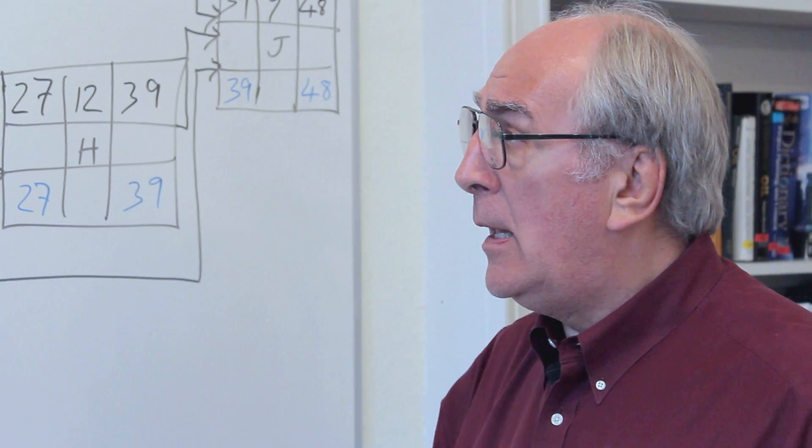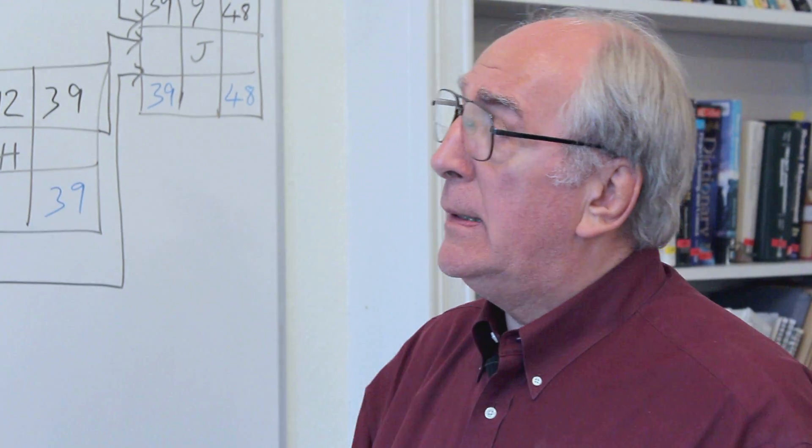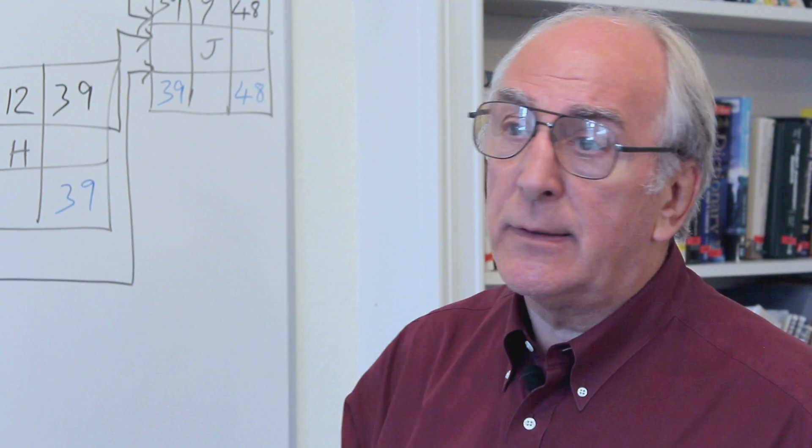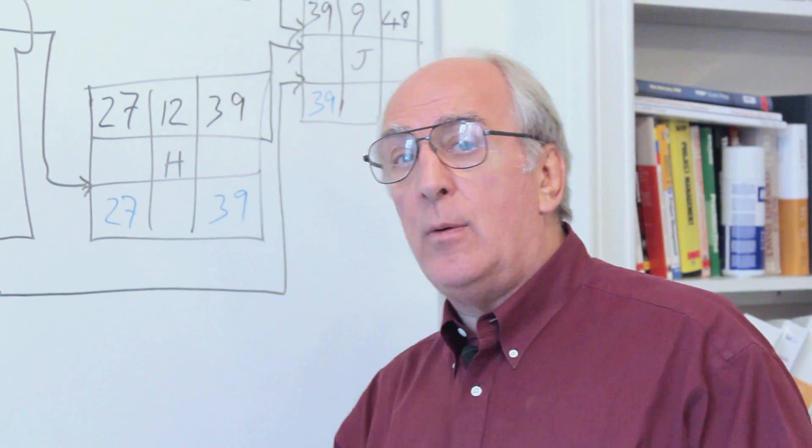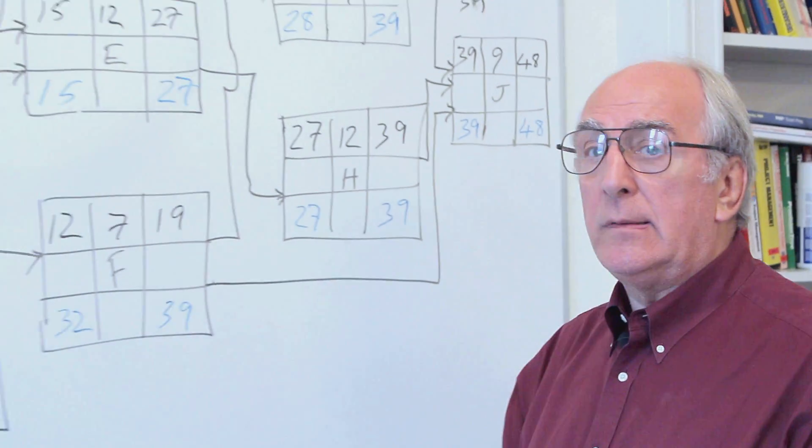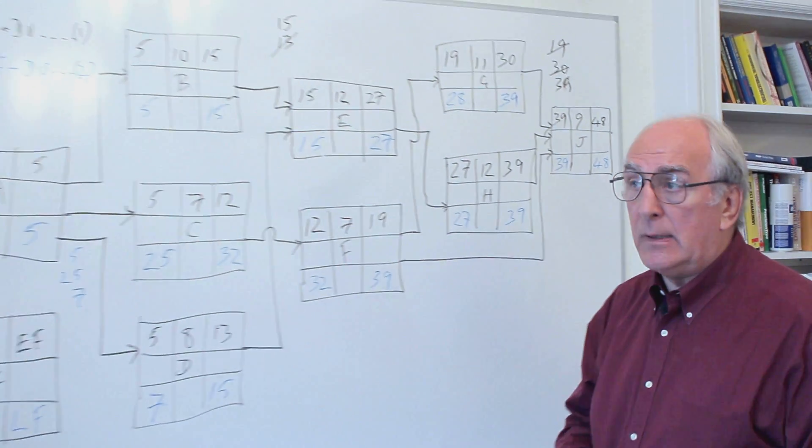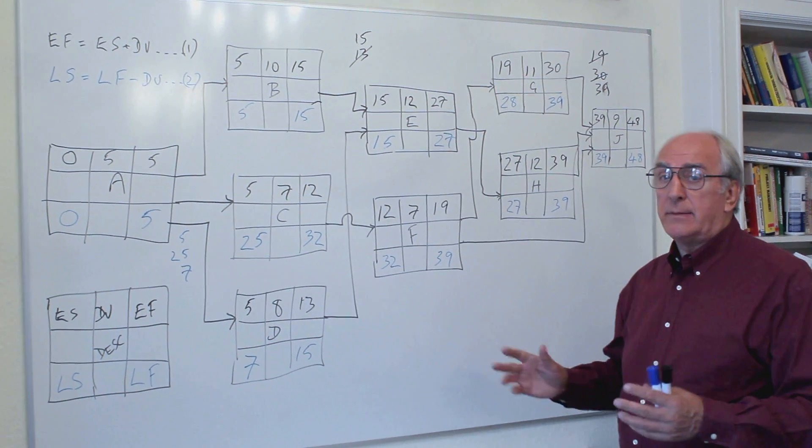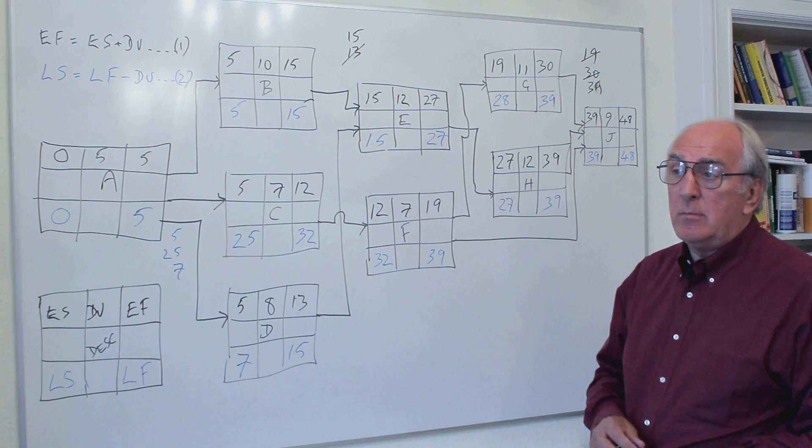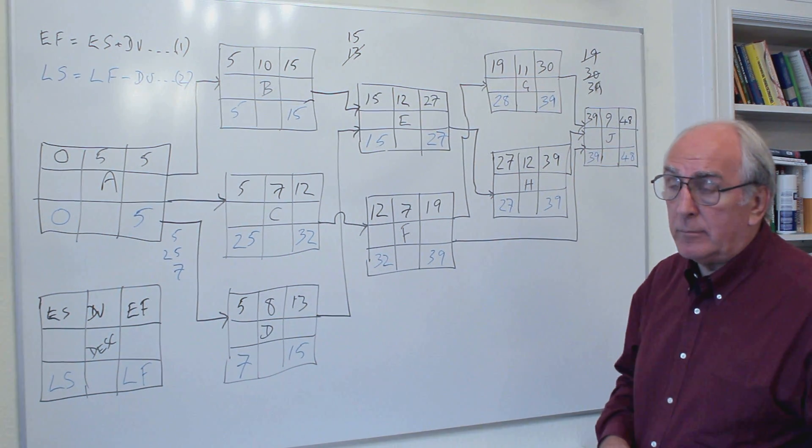So where have we got to? We've used two simple equations to look at the forward pass and the backward pass of a logic network. That network is a sequence of activities in building some facility, some asset, computer system, or building system.